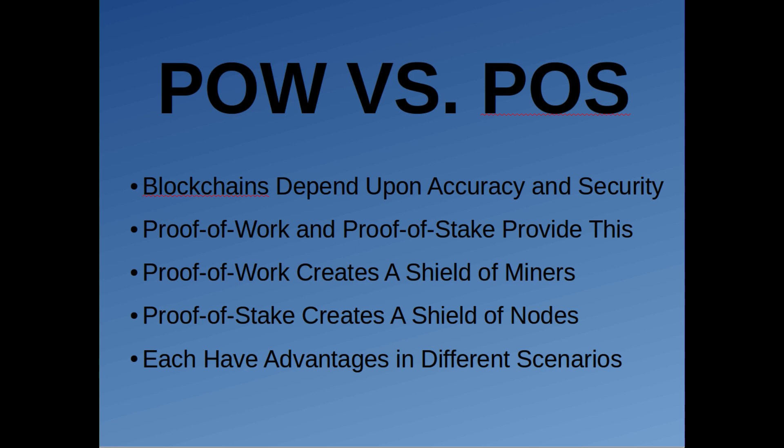So proof of stake, instead of using a network of miners, uses a shield of nodes. It creates this huge network of nodes that are always trying to be honest in order to ensure that the value of their own stake in the network remains. Because if somebody starts lying about the transactions occurring, the value of their stake is going to get lowered. Each of these — proof of work and proof of stake — have advantages and disadvantages. Proof of work's advantages are basically that it has a constant real-time greed incentive that makes sure forks, like soft forks, don't occur, and you don't have multiple blockchains going on. Proof of stake has a more long-term profit incentive, but that can create more short-term problems.